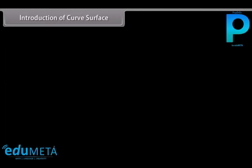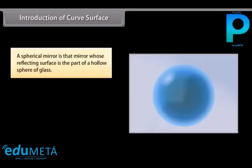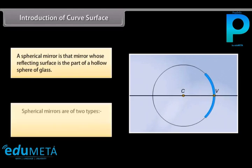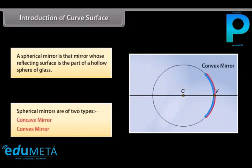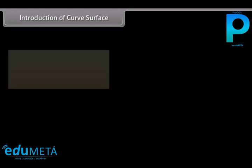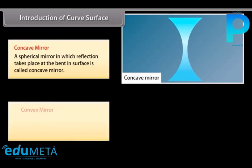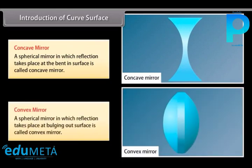A spherical mirror is a mirror whose reflecting surface is the part of a hollow sphere of glass. Spherical mirrors are of two types: concave mirror and convex mirror. A spherical mirror in which reflection takes place at the bent-in surface is called a concave mirror. A spherical mirror in which reflection takes place at the bulging-out surface is called a convex mirror.